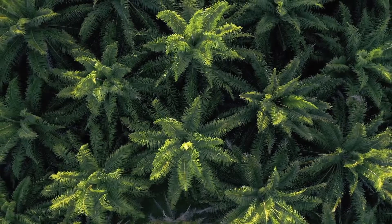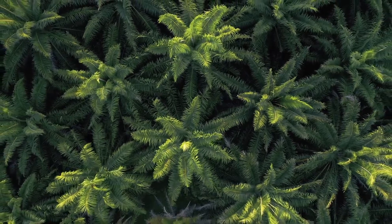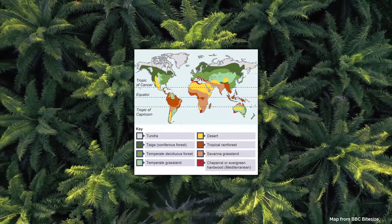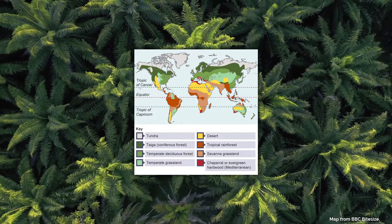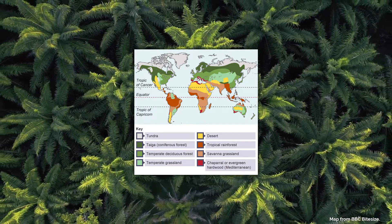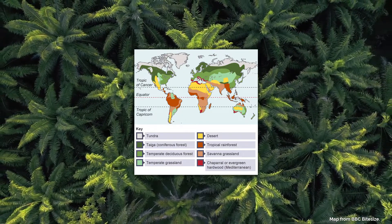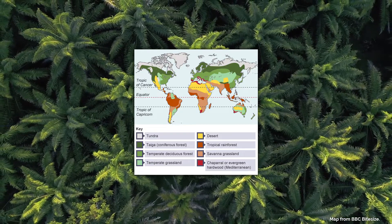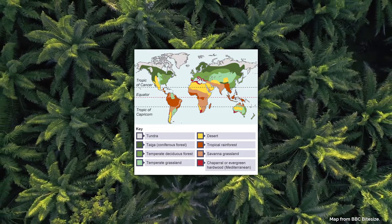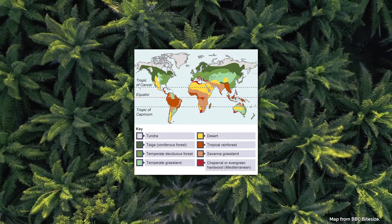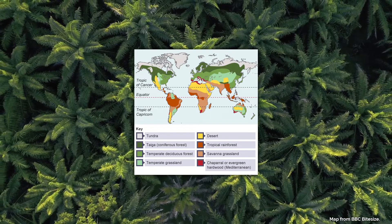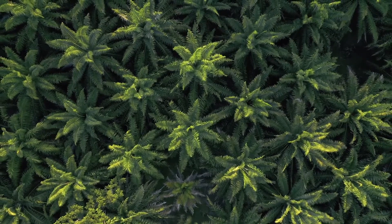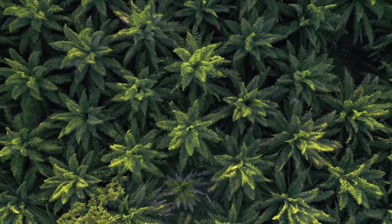Large scale ecosystems are known as global ecosystems or biomes. As you can see on this map, different biomes are found all over the world, however some are spread across continents. This is due to the climate and characteristics they have in common as a result of global atmospheric circulation. There are 8 biomes we are going to explore in the rest of this video.